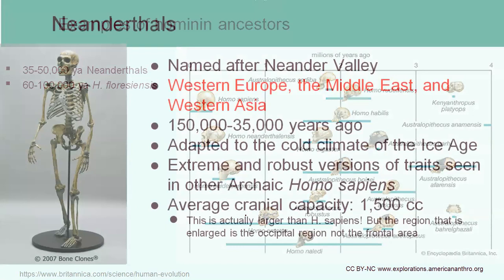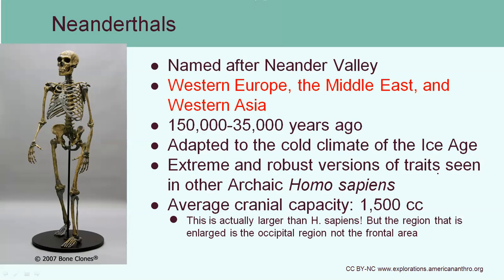Who were the Neanderthals? They're our typical example of a caveman — a very bulky, human-like creature hunting animals and wearing furs. They lived in Europe and are named after where their first fossils were discovered, the Neander Valley. Their bodies were very much adapted to the cold climate of the ice age, and they were most likely hunting large animals such as mammoths and other large mammals.